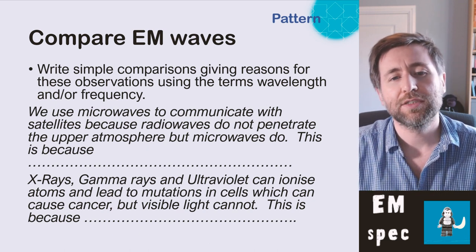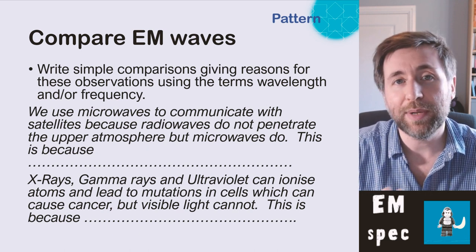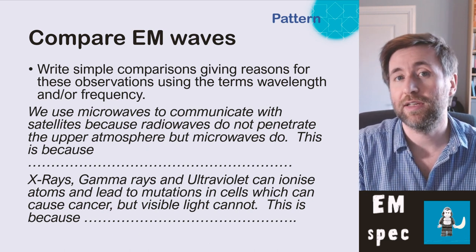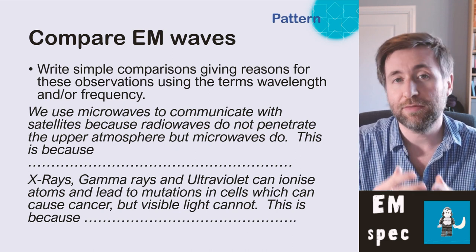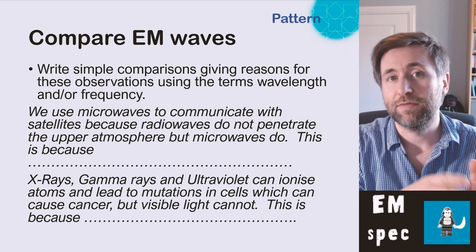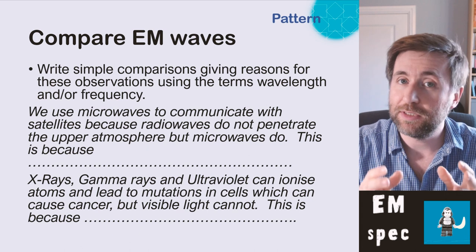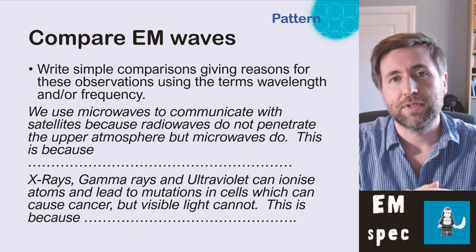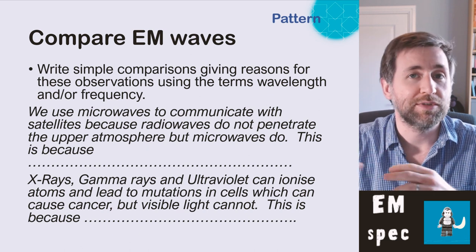For example: why do we use microwaves to communicate with satellites rather than radio waves? Because radio waves don't penetrate the upper atmosphere — microwaves have a higher frequency or shorter wavelength. X-rays, gamma rays and ultraviolet can ionize atoms and lead to mutations which can cause cancer, but visible light can't — because visible light has a longer wavelength or a lower frequency. The only difference between portions is the frequency or the wavelength, so all their uses come from that.